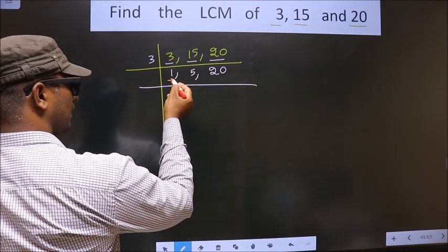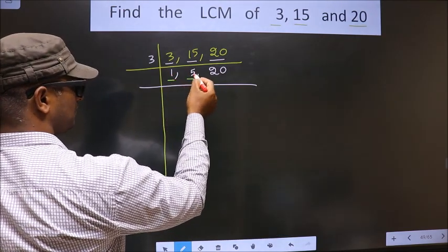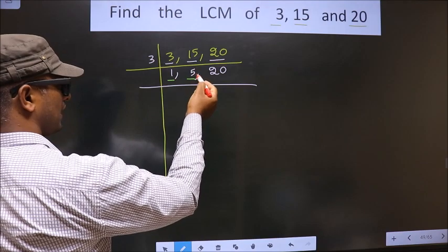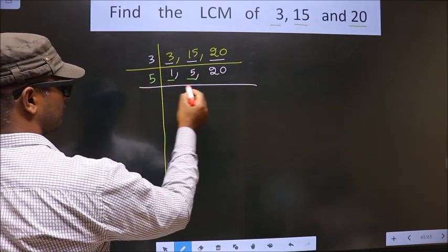Now, here we got 1. So, focus on the other number. That is 5. 5 is a prime number. So, we take 5 once 5.